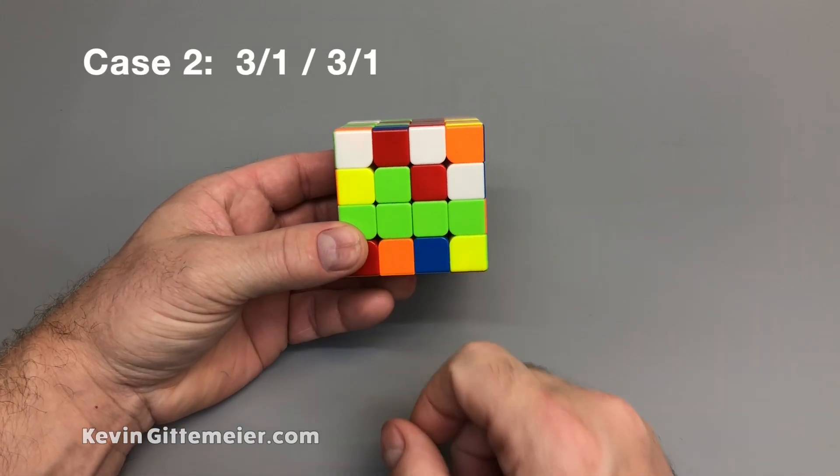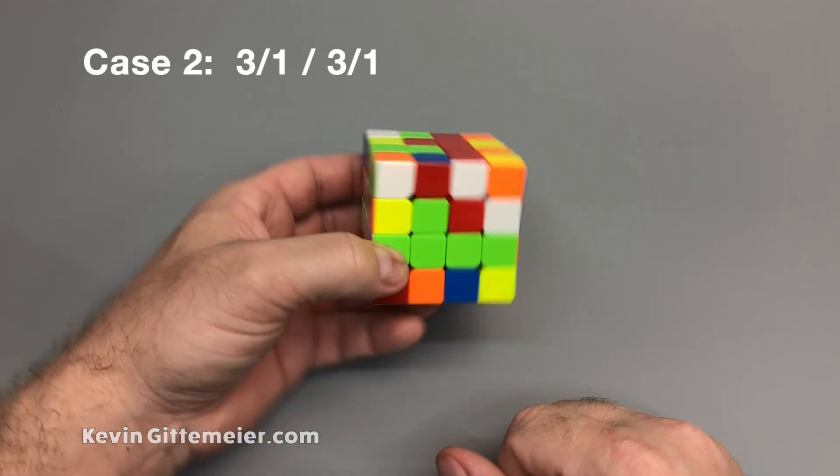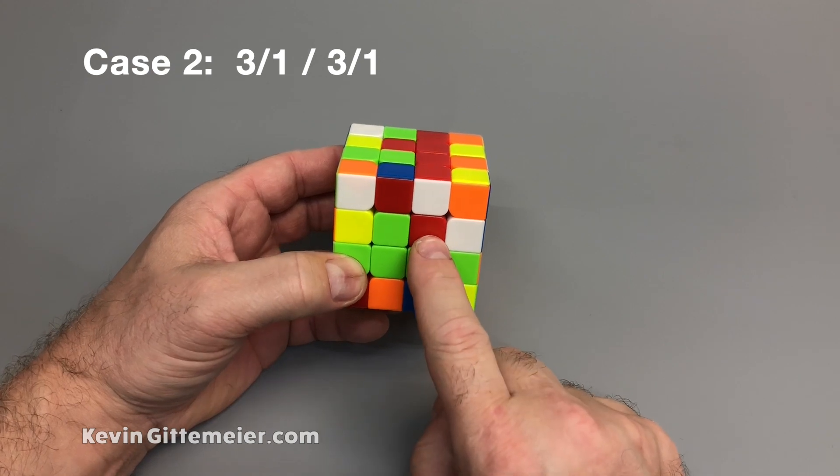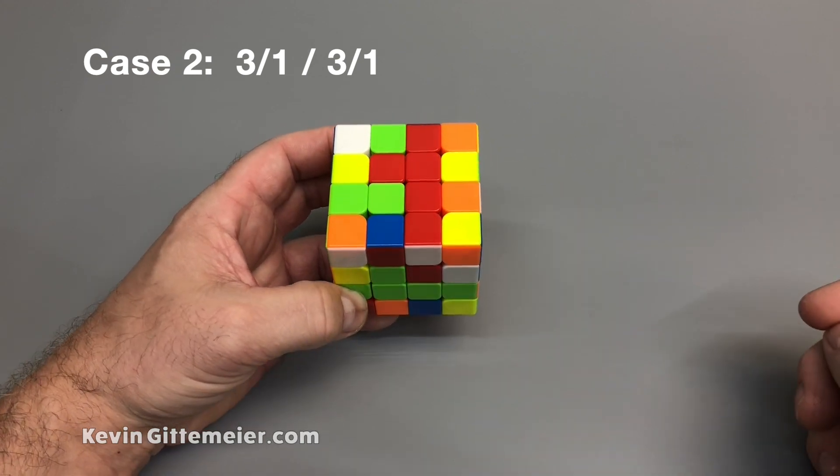Here I have three colors forming an L or a V, or however you want to think about it, and then just one of the opposite color. Same thing on top. Three and one.